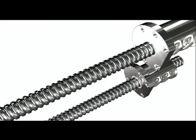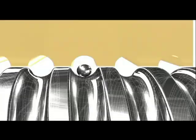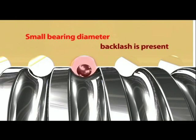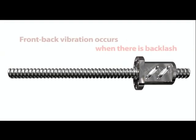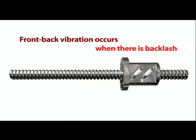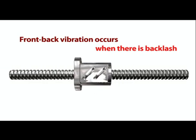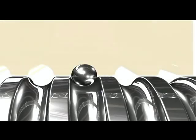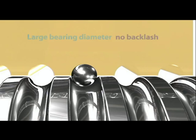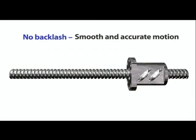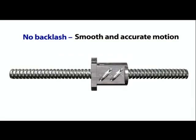Similarly, in the case of a ball screw, when the bearings are relatively small, because backlash exists, the nut will tend to vibrate back and forth as it performs its reciprocating motion. In contrast, when the bearings have a relatively large diameter, there will not be any backlash and preload will exist. In this case, there will be no vibration.